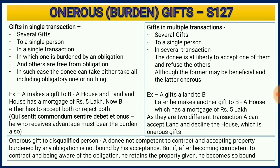The donee has two options: accept all the gifts or decline all the gifts. For example, A makes gifts to B — a house and land. The land is free of obligation, but the house has a mortgage loan of five lakh rupees. B must accept both house and land along with the obligation on the house, or decline both. He cannot choose only the land and decline the house. This is expressed by the maxim 'qui sentit commodum sentire debet et onus' — he who receives the advantage must also bear the burden.